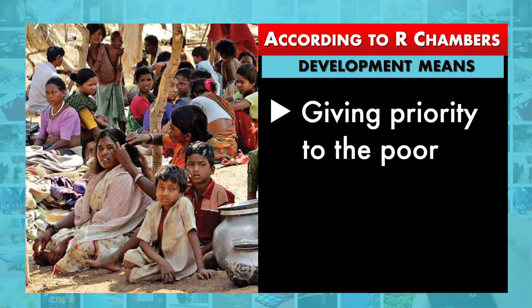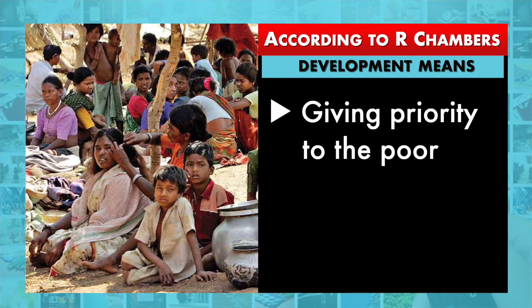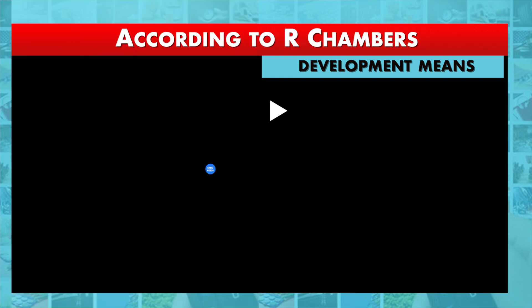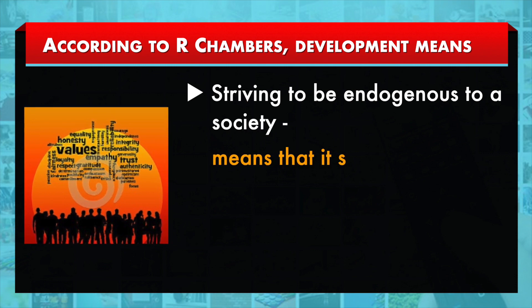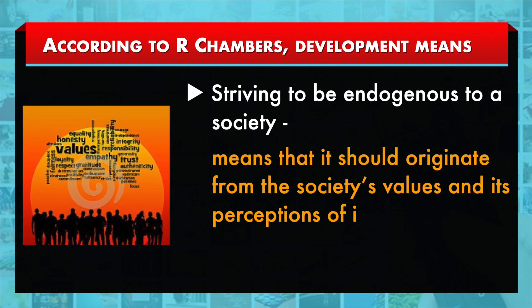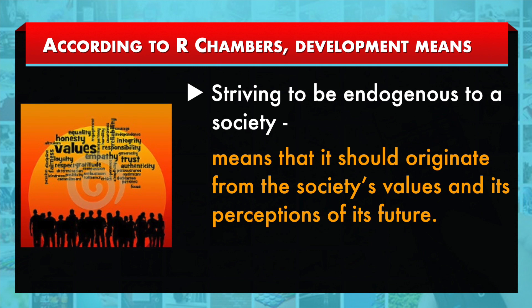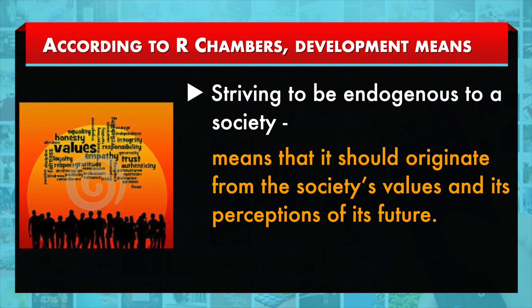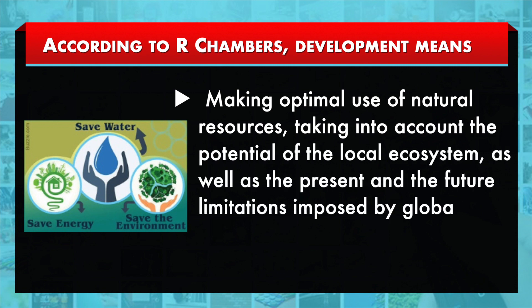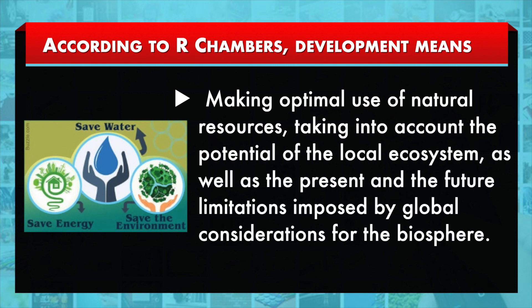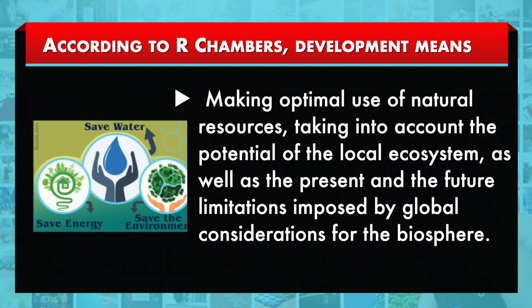According to Chambers, development means giving priority to the poor, aiming to meet the basic needs, striving to be endogenous to a society — meaning that it should originate from the society's values and its perception of its future — making optimal use of natural resources, taking into account the potential of the local ecosystem, as well as the present and future limitations imposed by global considerations for the biosphere.